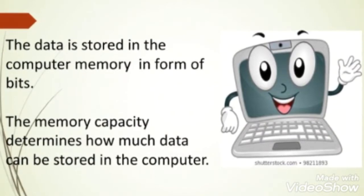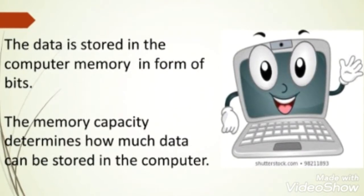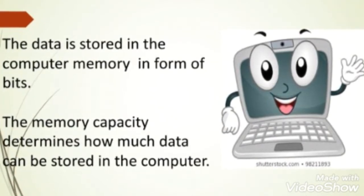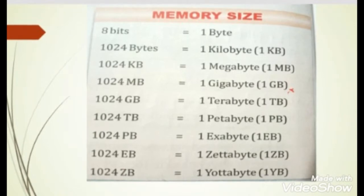Now the question arises: how much data can be stored in a computer? A computer stores data according to its memory capacity, or we can say according to memory size. The group of 8 bits is equal to 1 byte. It means if a computer has 1 byte of memory, it can store only 8 bits. 1024 bytes are equal to 1 kilobyte, or 1 KB, meaning 1 KB of memory space can store up to 1024 bytes.